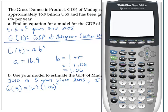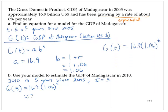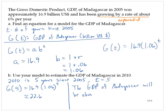Bringing up the calculator: 16.9 times 1.06 raised to the fifth power is 22.6. So according to our model, the gross domestic product of Madagascar will be about 22.6 billion US dollars in 2010.